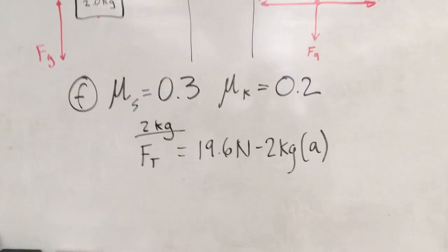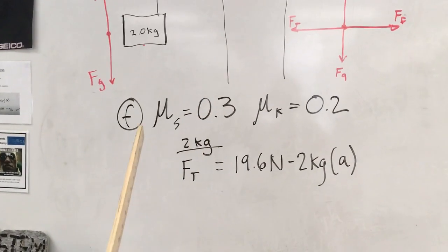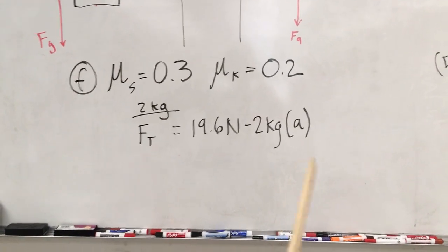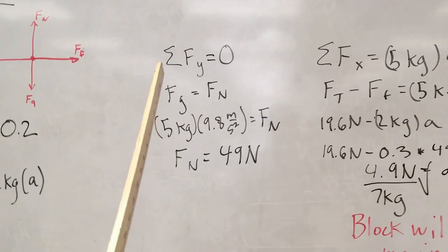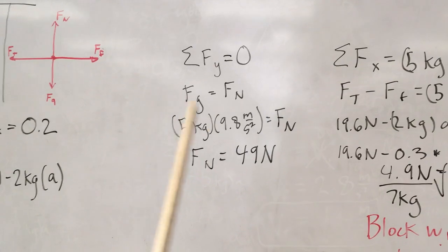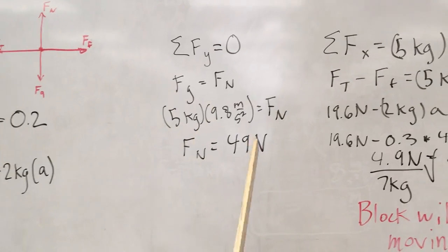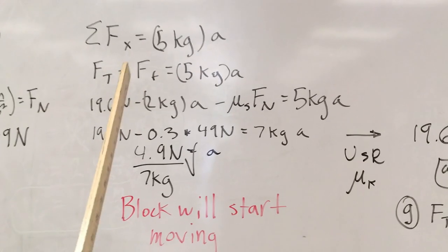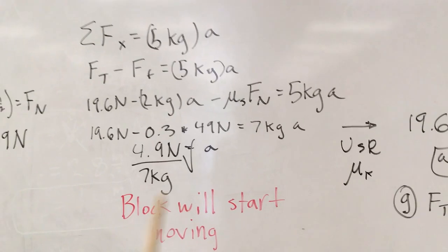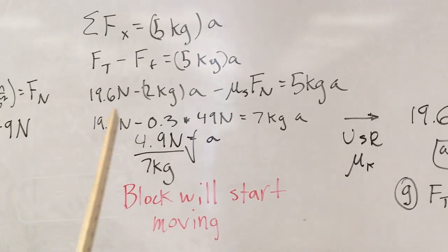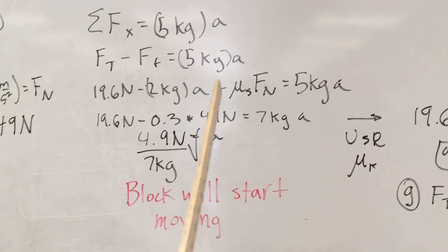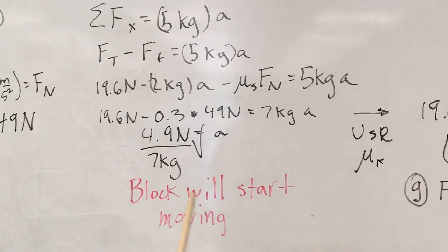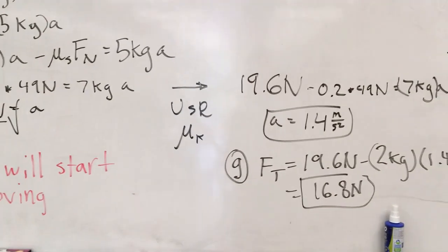For the last two sections, we must now account for friction. The coefficient of static friction is 0.3 and kinetic friction is 0.2. The two kilogram block is not affected by friction, so we still have the same tension expression. For the five kilogram block, we now care about the normal force, which equals the weight: 49 Newtons. The net force equation in the x direction changes because friction is now present. We must first check whether the block will actually start moving by comparing the driving tension force to the maximum static friction force.